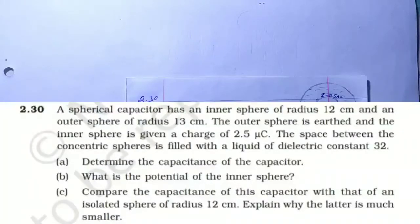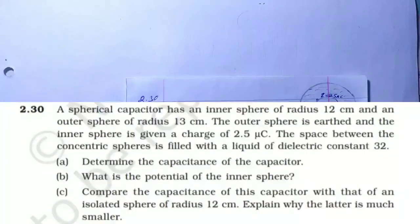A spherical capacitor has an inner sphere of radius 12 cm and outer sphere of radius 13 cm. The outer sphere is earthed and the inner sphere is given a charge of 2.5 microcoulombs. The space between the concentric spheres is filled with a liquid of dielectric constant 32. First, determine the capacitance of the capacitor. Second, what is the potential of the inner sphere? Third, compare the capacitance of this capacitor with that of an isolated sphere of radius 12 cm.